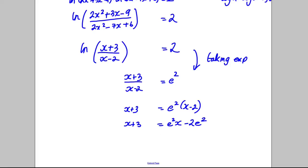Now get all the x's together and everything that's not x together. So I'm going to subtract e²x from both sides, and at the same time I'm going to subtract 3 from both sides. So what that will do is I'll have my x staying here, I'm subtracting e²x, is going to equal negative 2e² - 3.